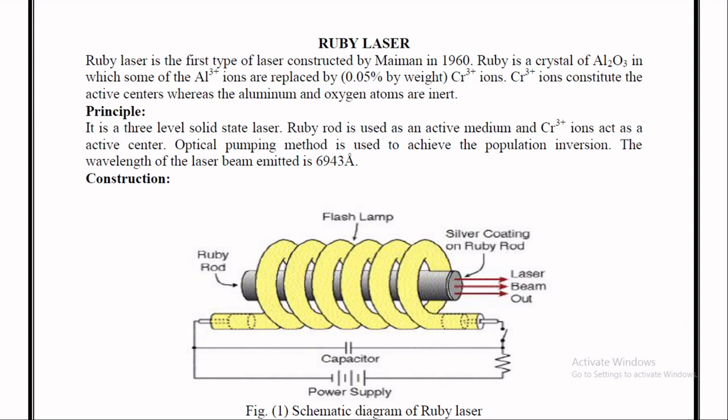Ruby laser is the first type of laser constructed by Theodor Maiman in 1960. Ruby is a crystal of alumina Al2O3 in which some of the aluminum three plus ions are replaced by chromium three plus ions, that is 0.05% by weight. Chromium ions constitute the active centers whereas the aluminum and oxygen atoms are inert.